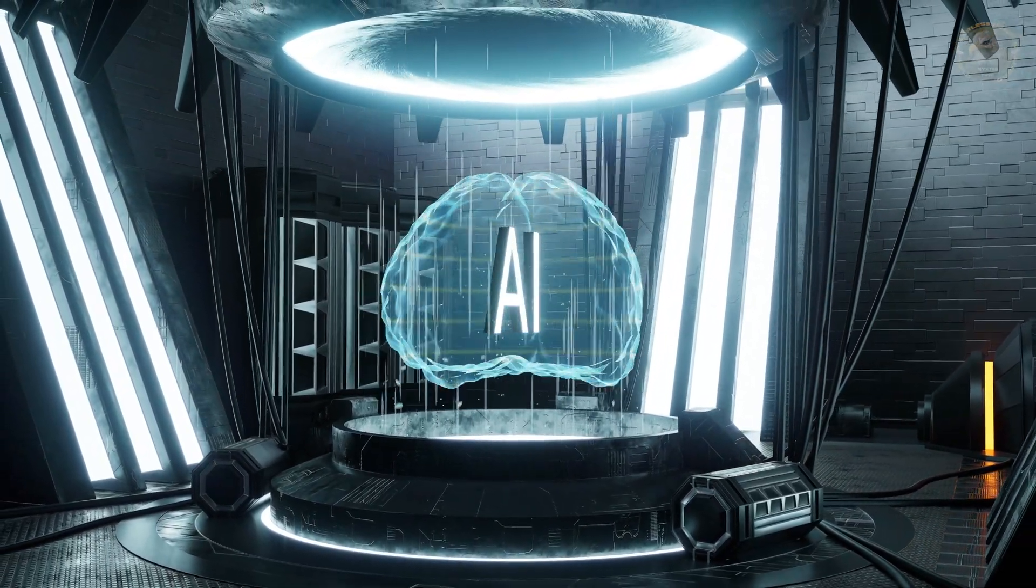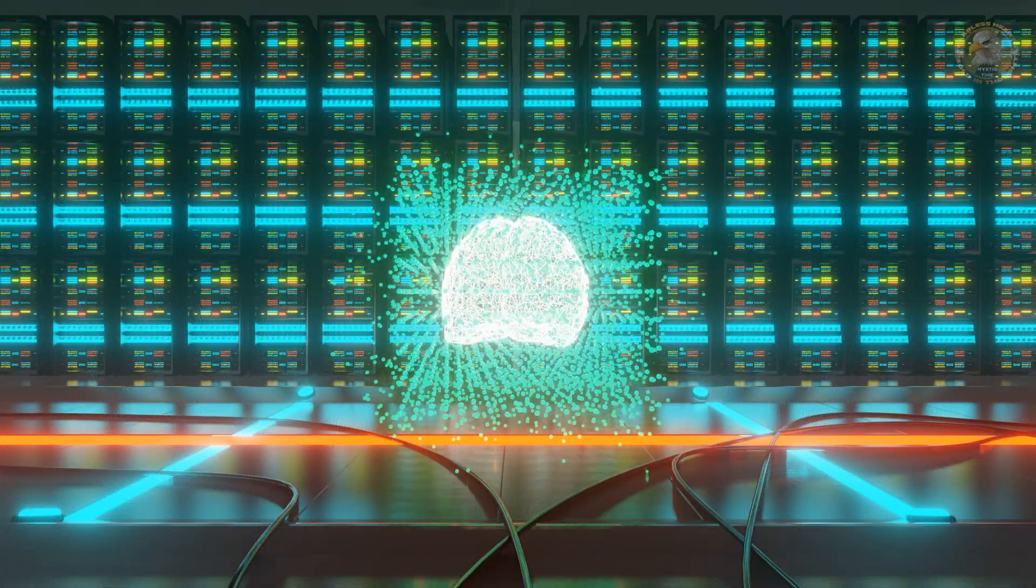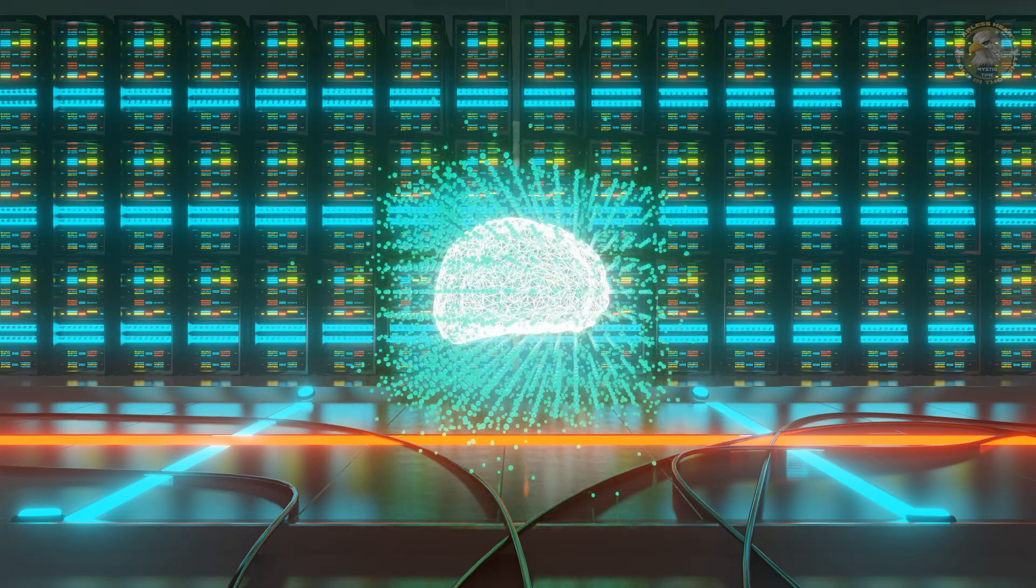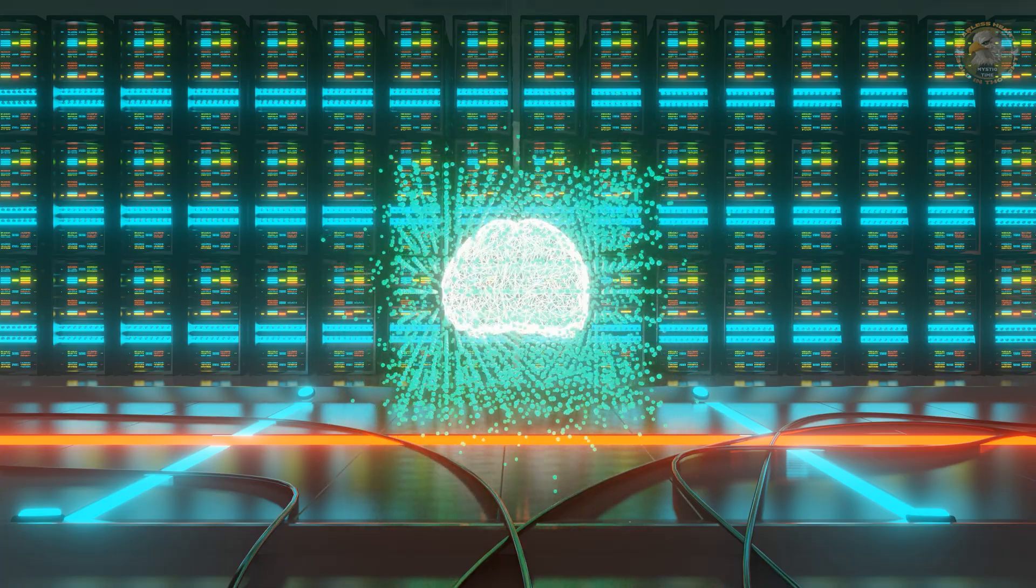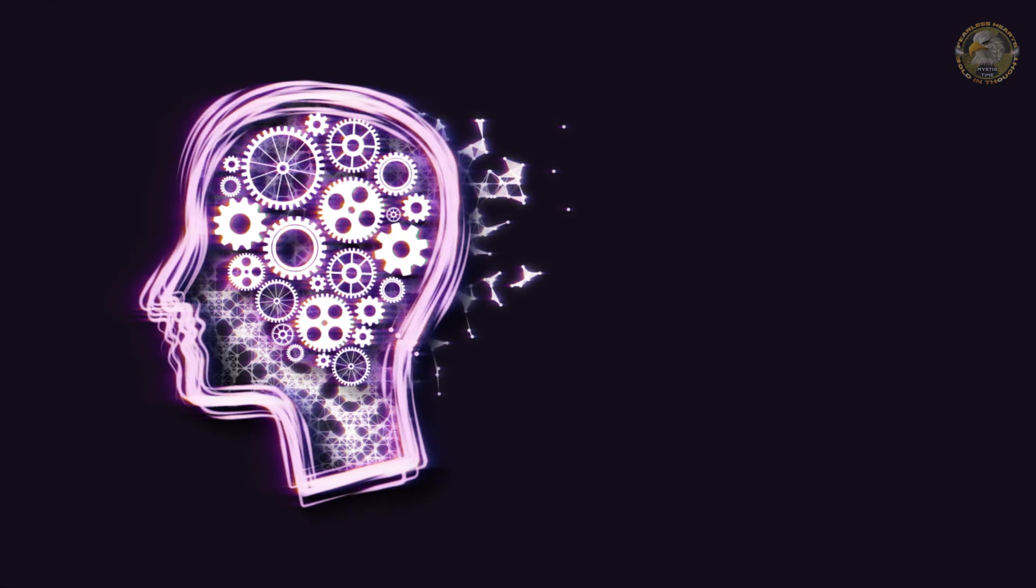So, what does this mean beyond lab mice and laser microscopes? Well, everything. Because if your brain isn't just using one learning rule, but a whole cocktail of them, that completely changes how we think about behavior, emotion, and even the tech trying to mimic us.